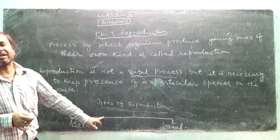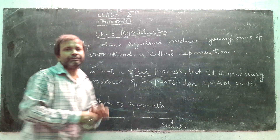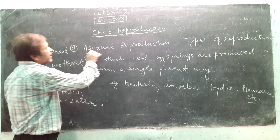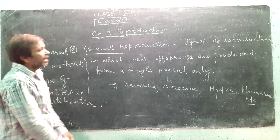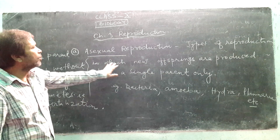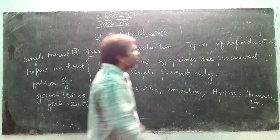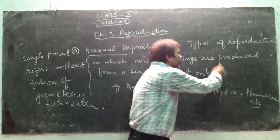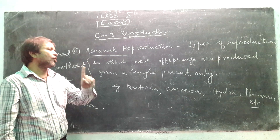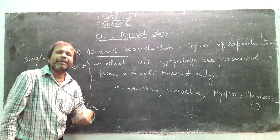Basically there are two types of reproduction: asexual and sexual. The first type is asexual reproduction. It can be defined as the type of reproduction in which new offspring are produced from a single parent only. For production of new offspring, a single parent is required.